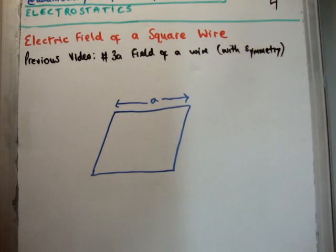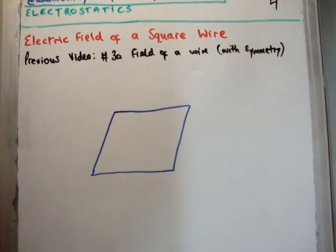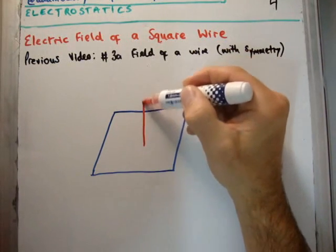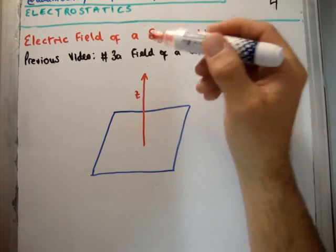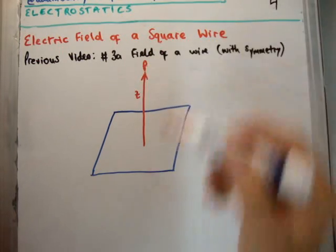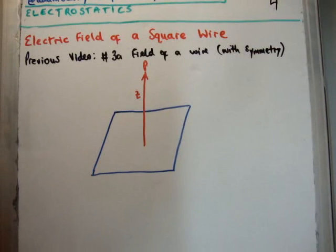What we're trying to do then is measure the electric field produced by these 4 line segments or wire segments at a point perpendicular to the plane. Let's say I'm going to call it the Z axis at point P. So we see that the wire occupies the XY plane and we're trying to measure the field in the Z axis.